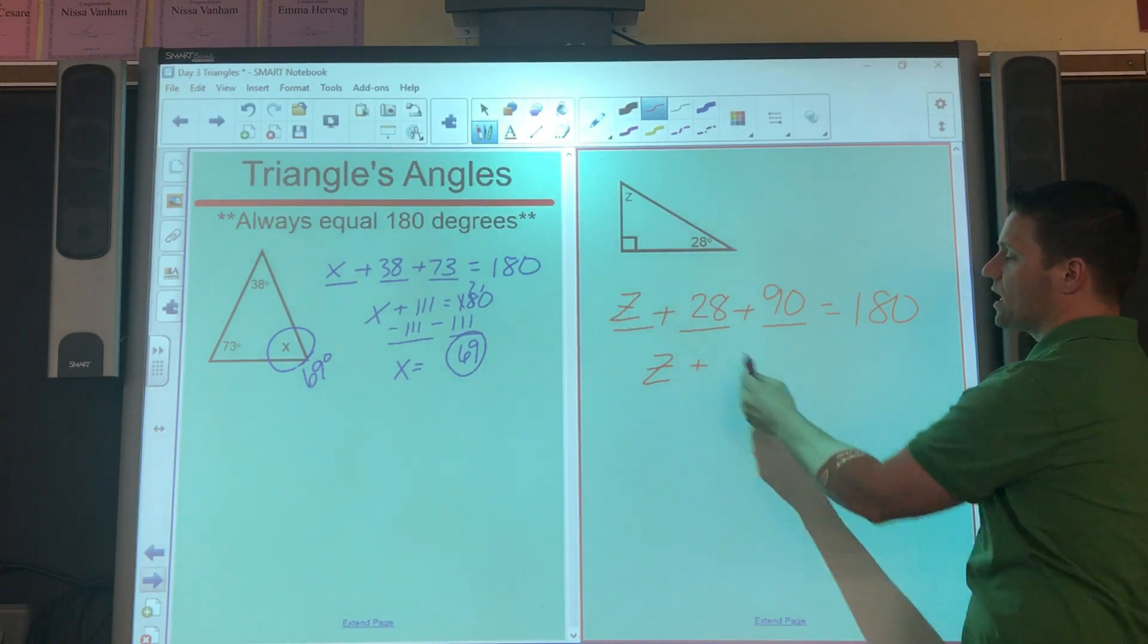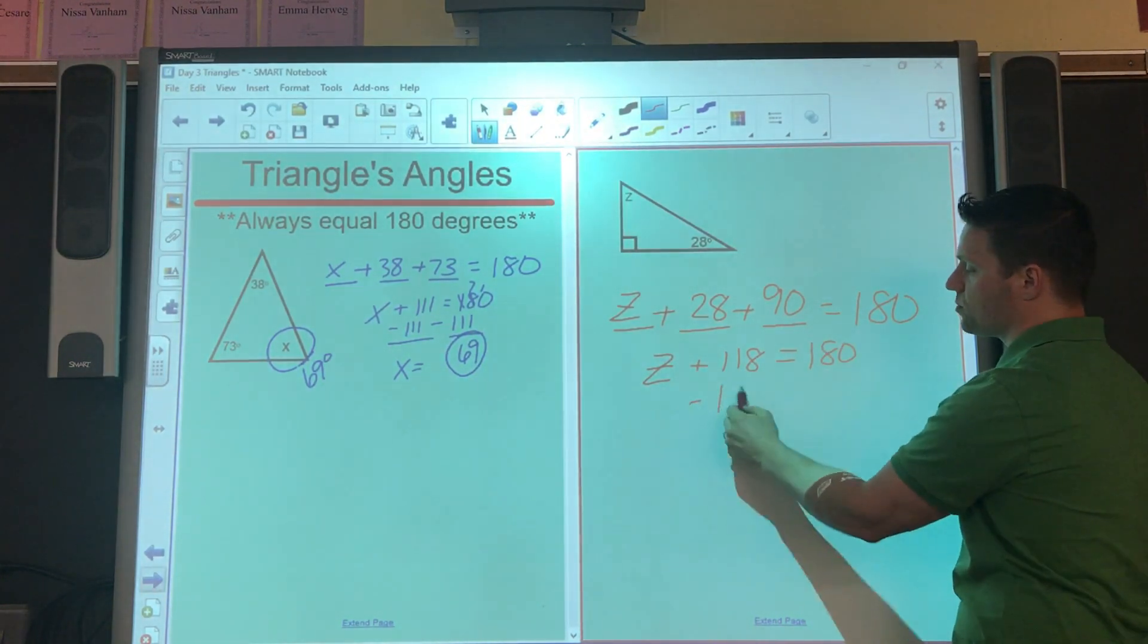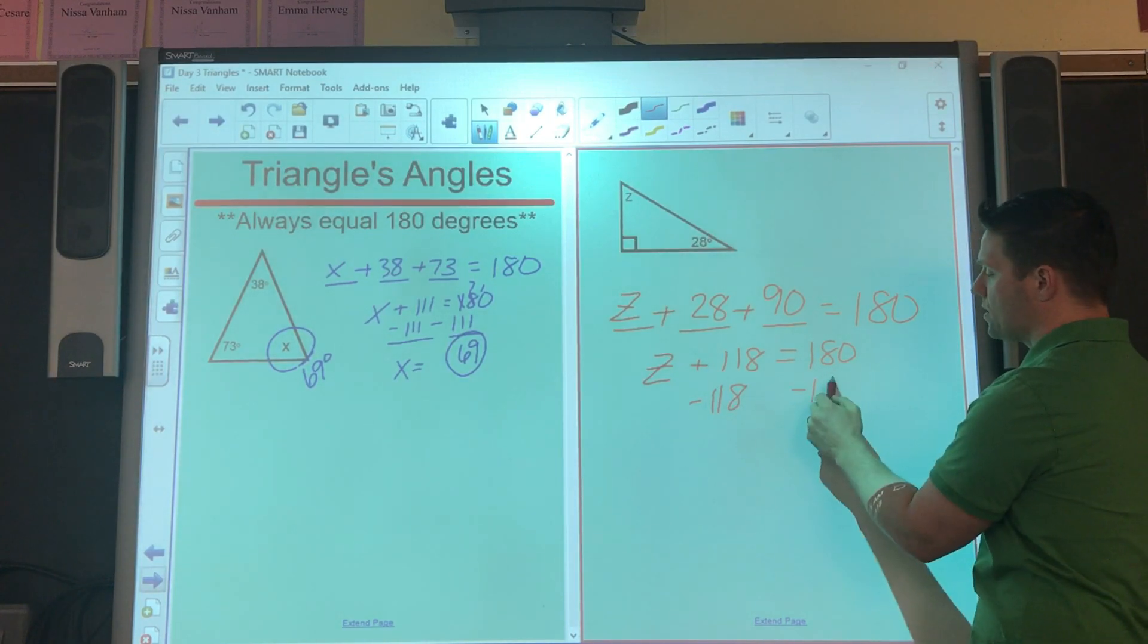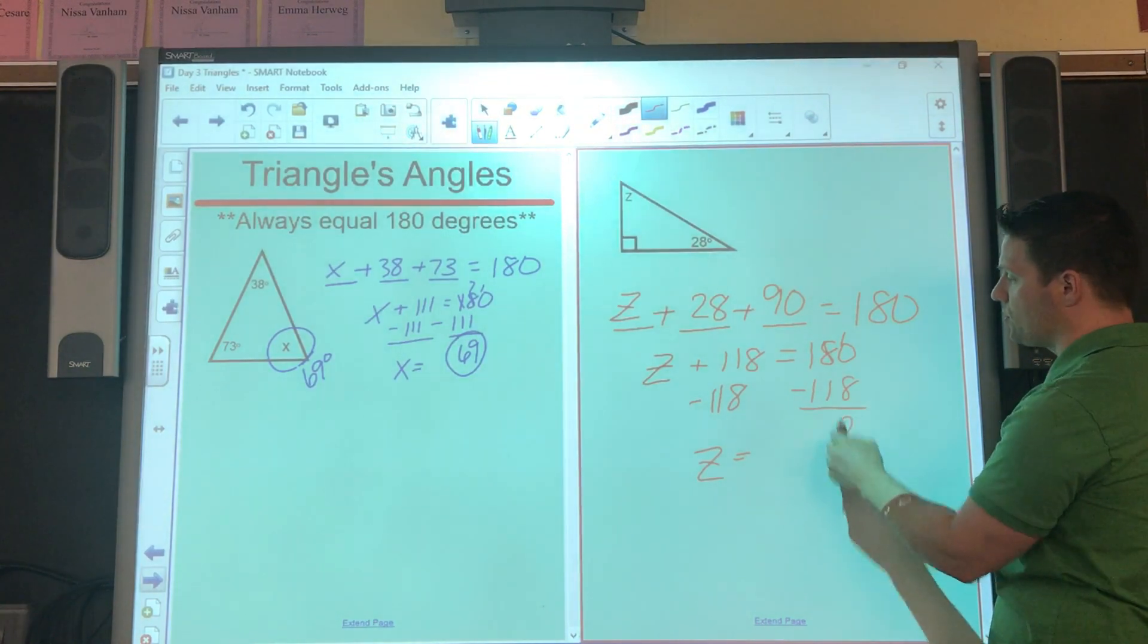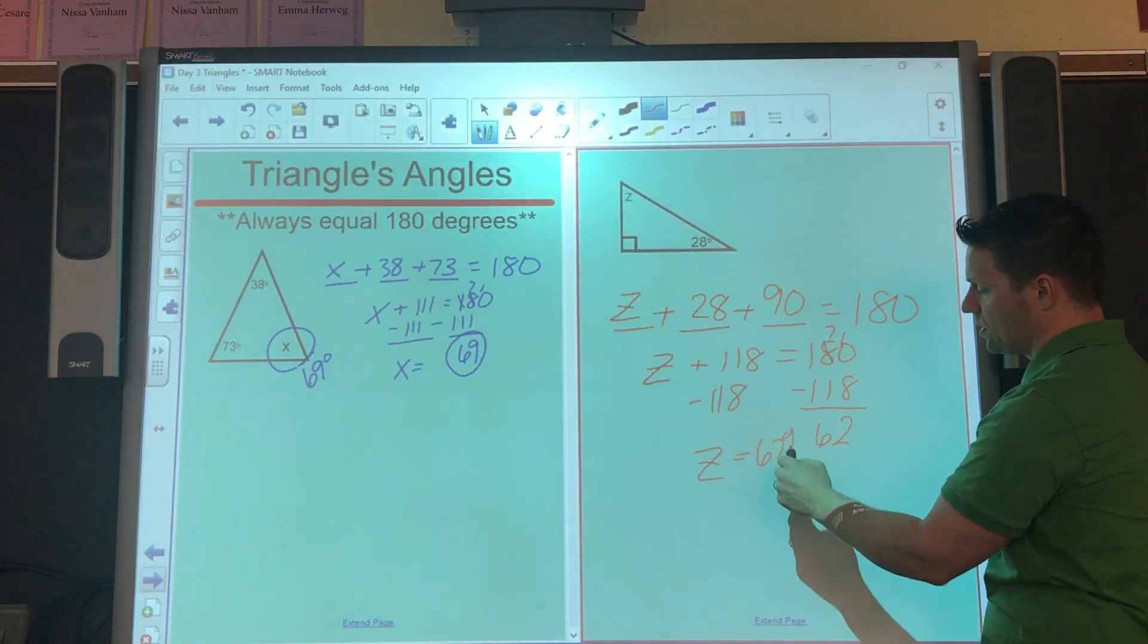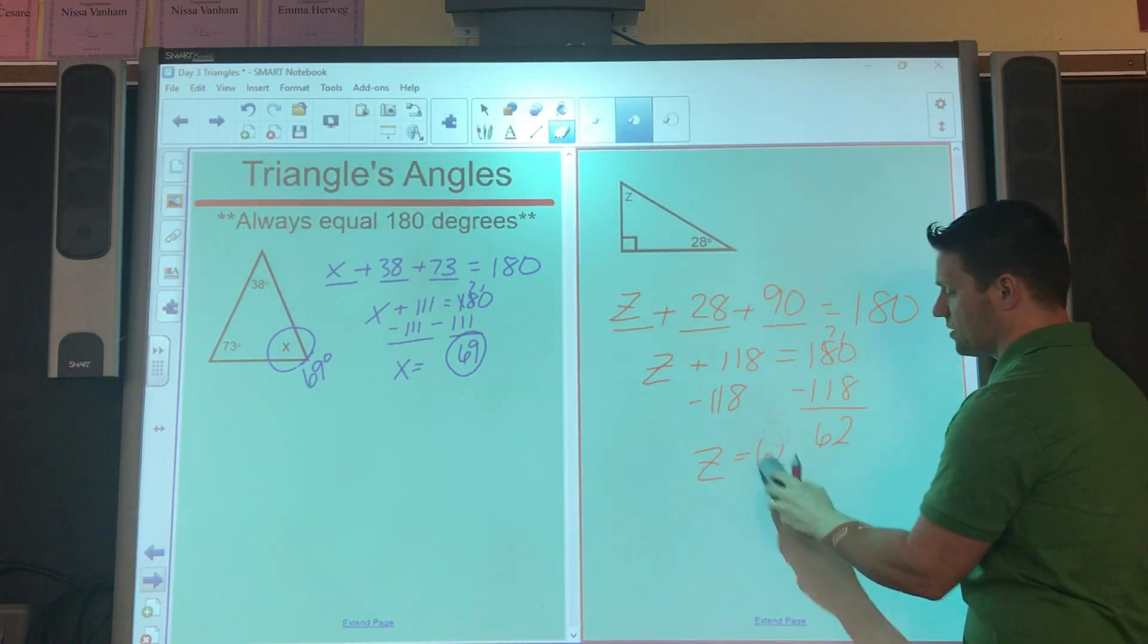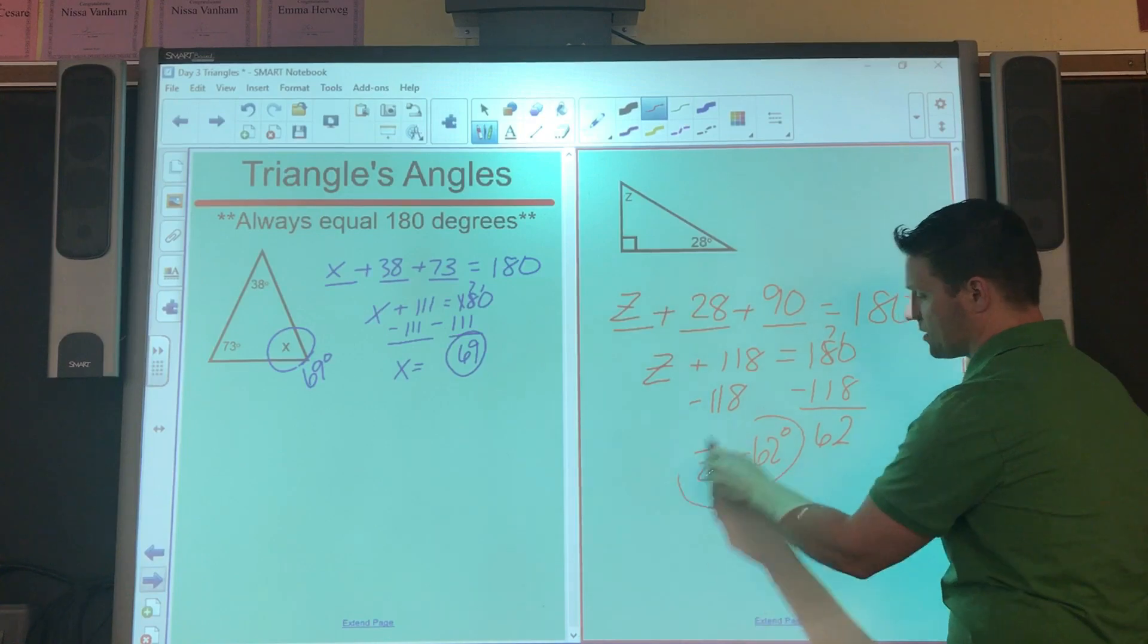90 plus 28 is 118, and I'm going to subtract those on both sides, 118 minus 118. I'll do that subtraction here for us, and that turns to a 2, this is 7, so it's only 6, 62 degrees. Not percent, that's my mistake, 62 degrees.